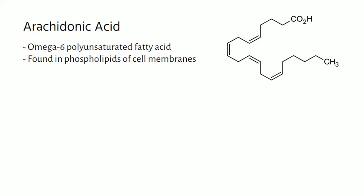Arachidonic acid is abundant in the brain, muscles, and liver. Skeletal muscle is an especially active site of arachidonic acid retention, accounting for roughly 10-20% of the phospholipid fatty acid content.